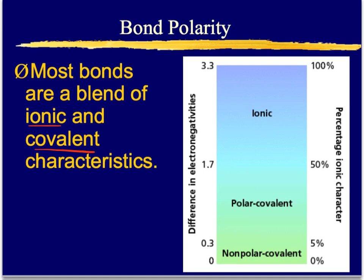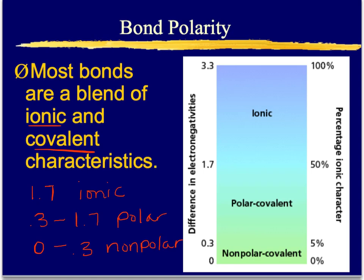We can determine the type of bond by looking at the electronegativity difference. On the back of your periodic table, you can see the electronegativity values for common elements and just compare the difference. If the difference is 3.3, the bond is very ionic. At 1.7, it's on the border of ionic or polar covalent. At 0.3, it's between nonpolar and polar covalent. The rule of thumb: above 1.7 is ionic, between 0.3 and 1.7 is polar covalent, and between 0 and 0.3 is nonpolar covalent.